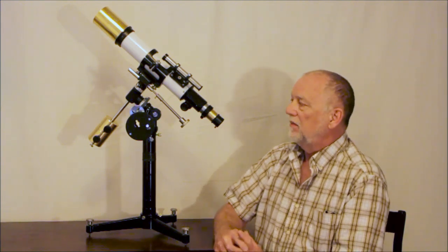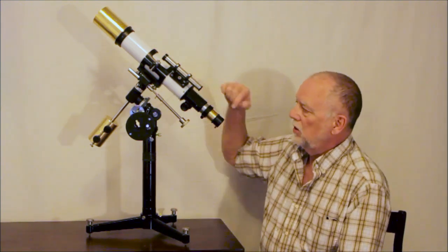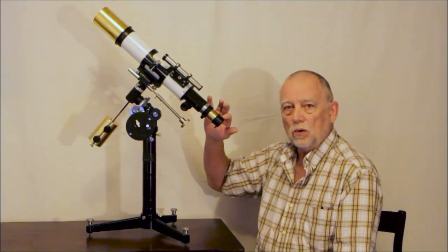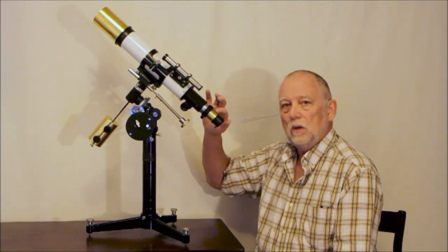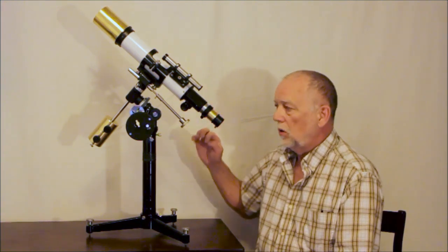So you basically have a Zeiss telescope objective. This has an inch and a quarter focuser. This will accept inch and a quarter eyepieces.